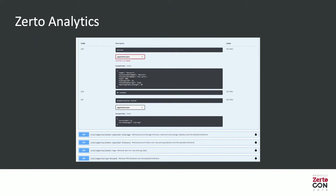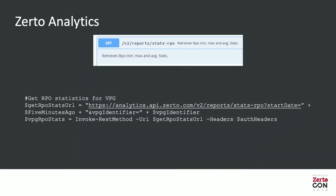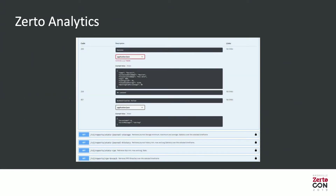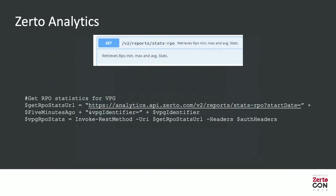We have the RPO Stats API call in Zerto Analytics, which gives you statistics like averages, minimum, and maximum RPO for a specific VPG, and you can do alerting on that. As an example, I used PRTG — I pulled that information from the API using a script, which you can find on our GitHub. It runs every five minutes and returns that data in an XML format the monitoring tool understands. The output format can be adjusted for Nagios or any other monitoring tool, since the data is the same.